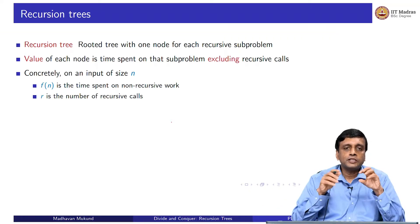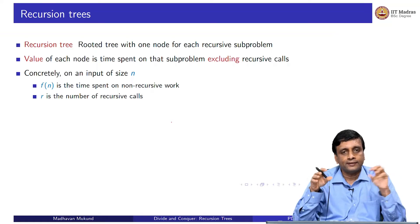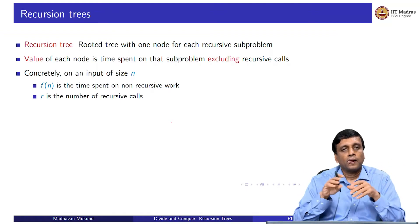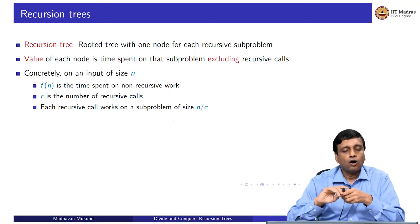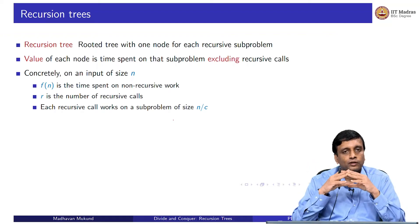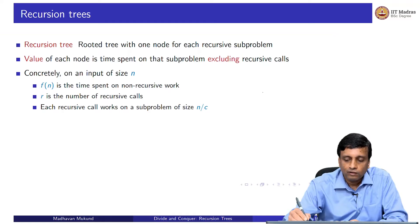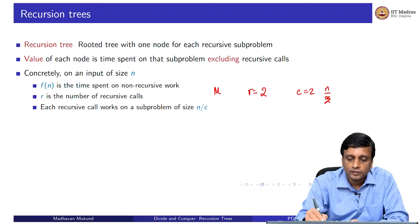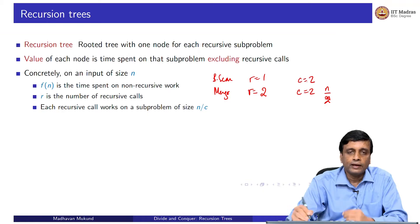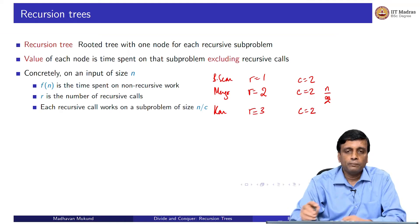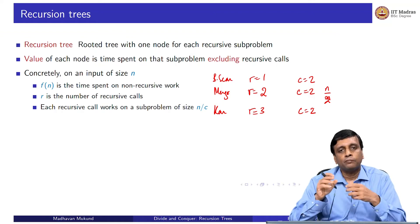Having done that, we split into some number r of recursive calls on a smaller fraction n/c of the input. In Karatsuba's algorithm r=3, in naive multiplication r=4, and in merge sort and binary search r=2. These two parameters r and c are independent: r is the number of subproblems to solve and c is the factor by which the input size is reduced. In binary search r=1, c=2; in merge sort r=2, c=2; in Karatsuba r=3, c=2.